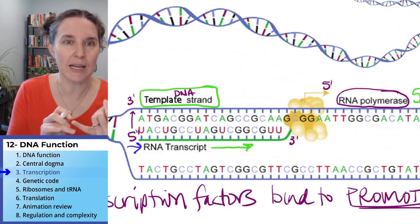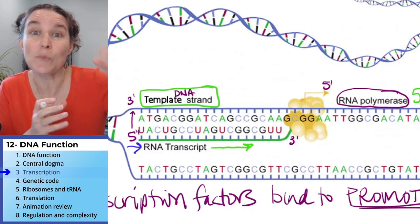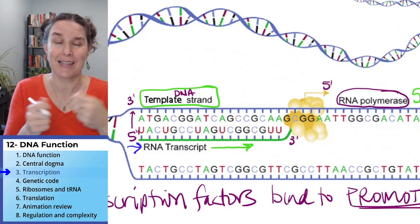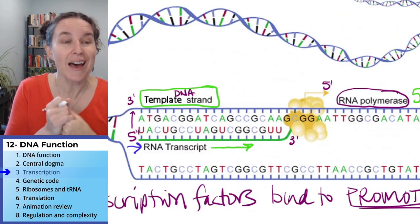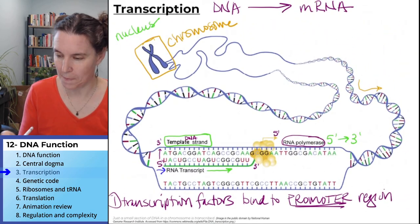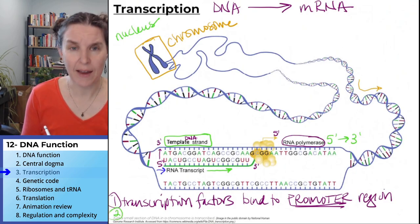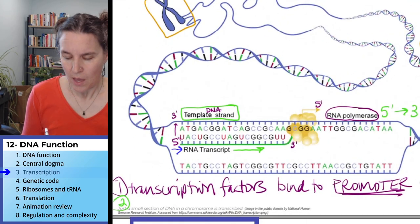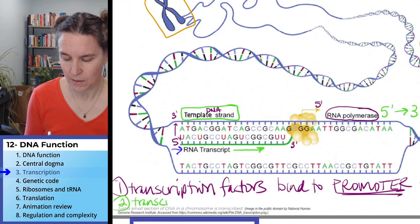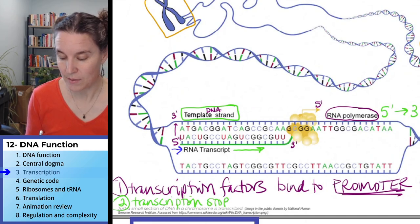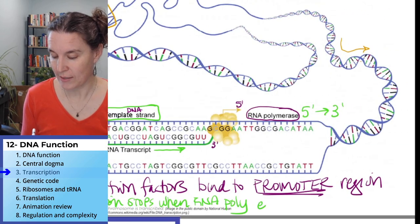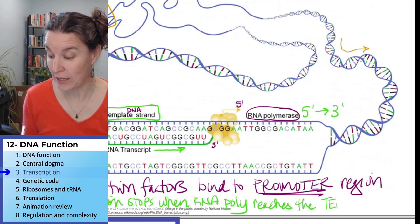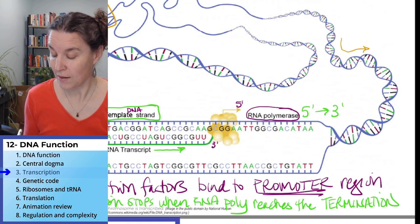RNA polymerase comes in, transcription factors indicate the promoter region, and RNA polymerase says: I got this — I can make a messenger RNA string all day long. Eventually it will reach the termination sequence, and transcription stops when RNA polymerase reaches the termination sequence.